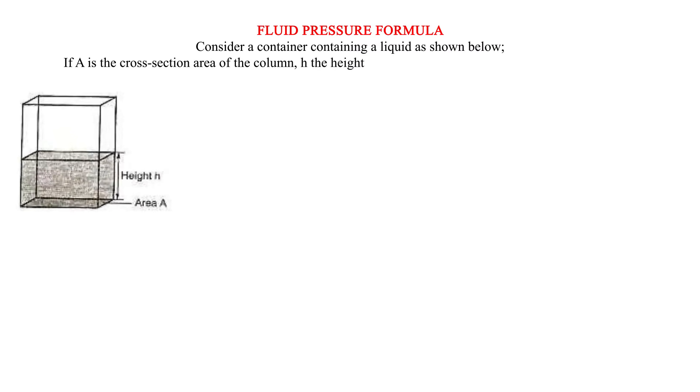Fluid pressure formula: Consider a container with liquid as shown. If A is the cross-sectional area of the column, h is the height, and ρ is the density of the liquid, then: